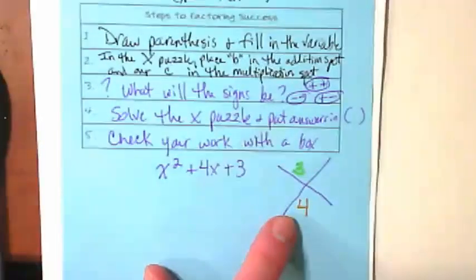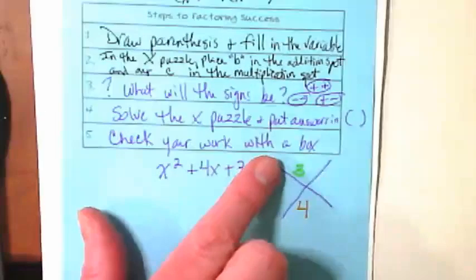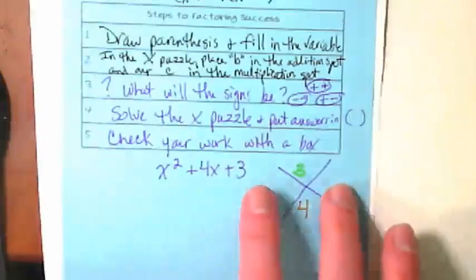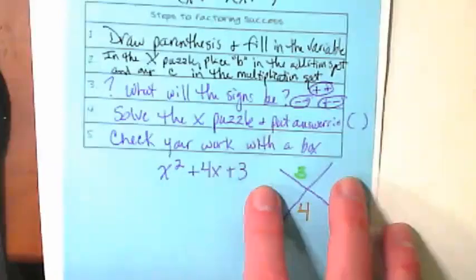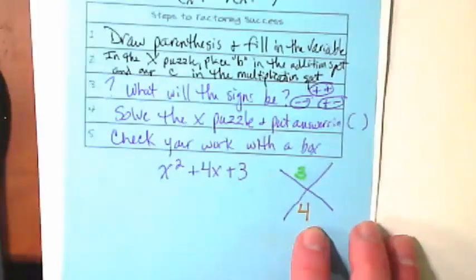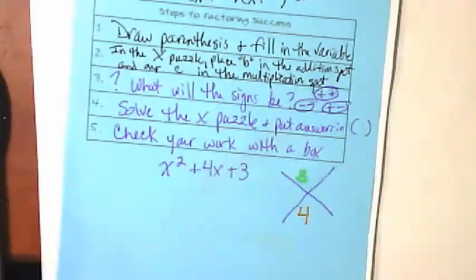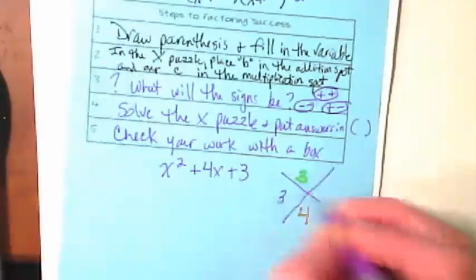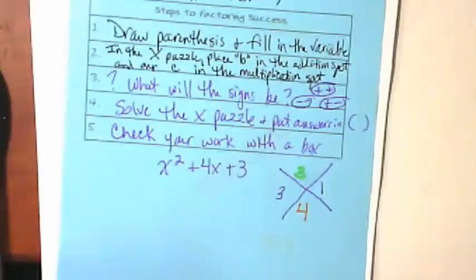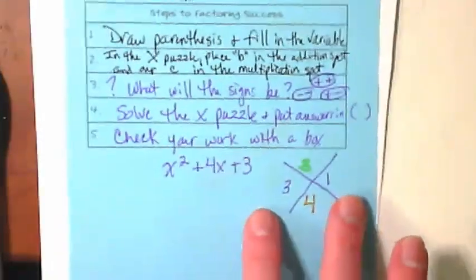And then up here, we're going to put the number that's in the c spot, which is 3. If you remember, this is what we're adding, and this is what we're multiplying. What we want to put here are two numbers that when I add them together, I get 4, and when I multiply them together, I get 3. When I add 3 and 1, do I get 4? When I multiply 3 and 1, do I get 3? Then that means that this works.